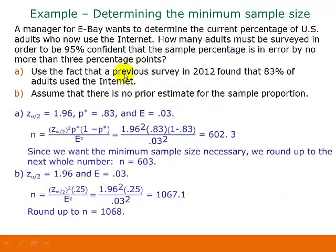Here's an example. A manager for eBay wants to determine the current percentage of U.S. adults who now use the Internet. How many adults must be surveyed in order to be 95% confident that the sample percentage is in error by no more than 3 percentage points? For part A of this question, we'll use the fact that a previous survey in 2012 found that 83% of adults use the Internet. For part B, we'll assume that there's no prior estimate for the sample proportion.